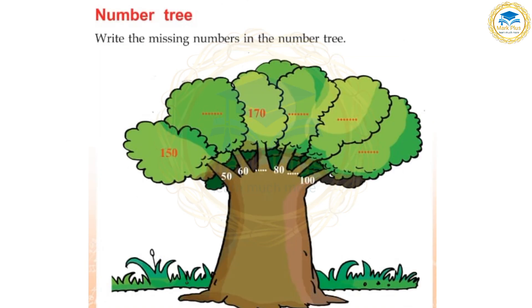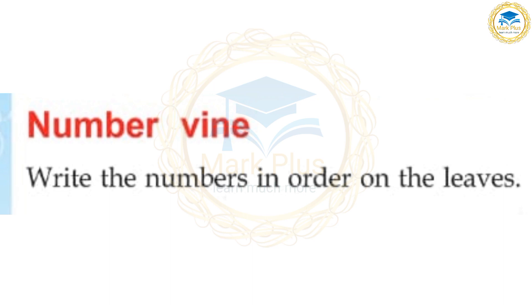Number tree. Write the missing numbers in the number tree: 50, 60, 70, 80, 90, 100. This number tree goes up to 150.